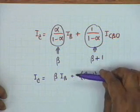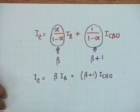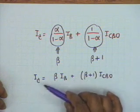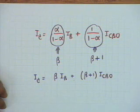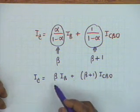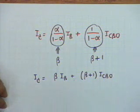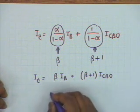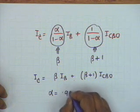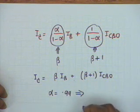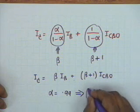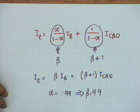If we ignore the ICBO term, the collector current is exactly proportional to the base current, with proportionality constant β. This is why β is called the current amplification factor under the common emitter connection. β can be much larger than unity — for example, if α = 0.99, then β = 99.